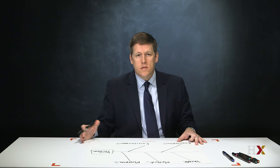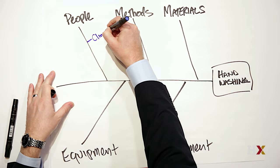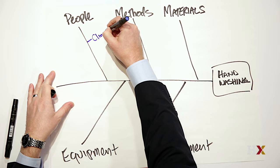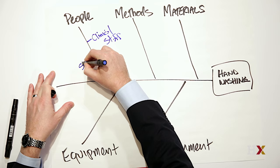So as you're looking at each of the categories, you want to generate a list of causes. In this example, people might include clinical staff. It also might include non-clinical staff. I'll just put them as just other staff.